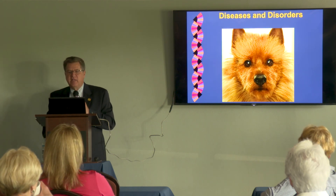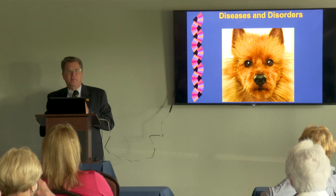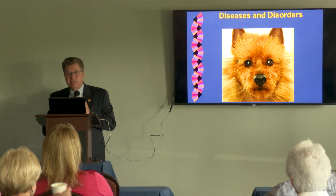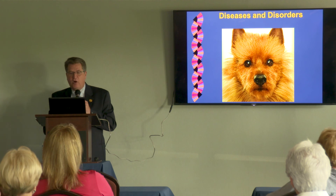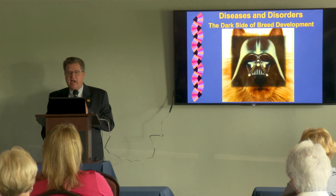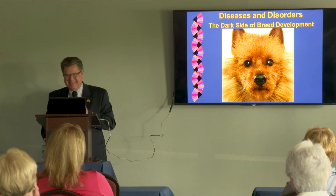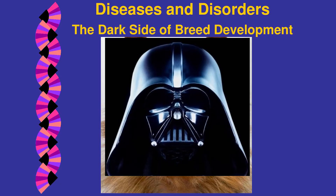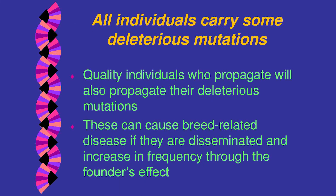Let's quickly talk about the population aspect of diseases and disorders — what I call the dark side of breeding development. All individuals carry some deleterious mutations. Quality individuals who propagate will also propagate their deleterious mutations — everyone's got some.